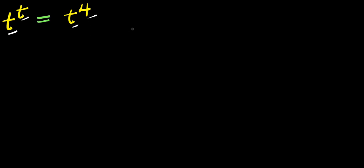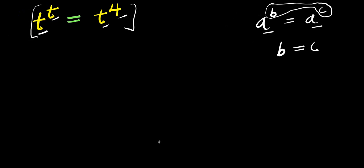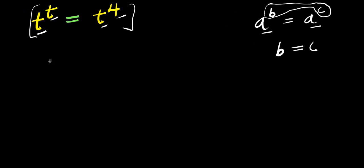So what we are going to do is, if you consider this identity — if you have a power b and this equals a power c, now since the bases are the same, you can equate the exponents, so you have b equals c. Now if you apply that same identity right here, what you are going to get will be t equals 4, because the bases are the same, so you compare the exponents.